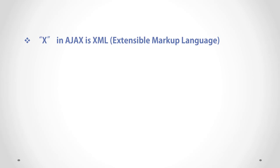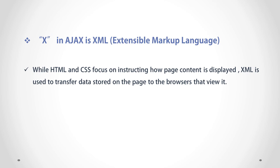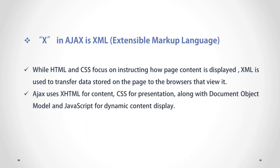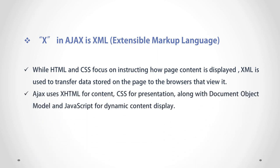The X in AJAX is XML, which stands for Extensible Markup Language. While HTML and CSS focus on instructing how page content is displayed — like paragraphs, headers, font, and colors — XML is used to transfer data on the web page to the browser that views it. AJAX uses XHTML for content, CSS for representation, along with the Document Object Model and JavaScript for dynamic content display.